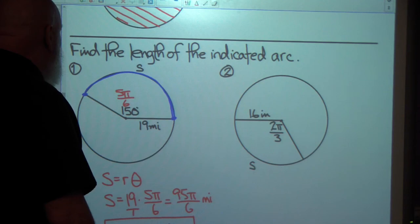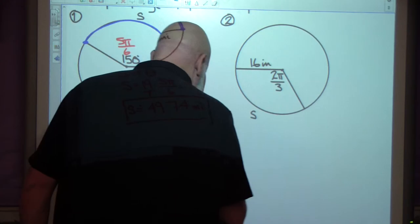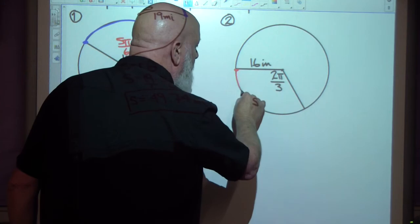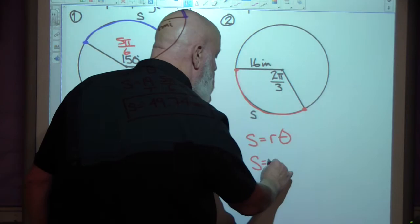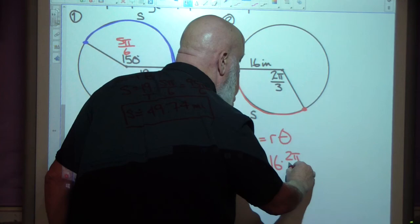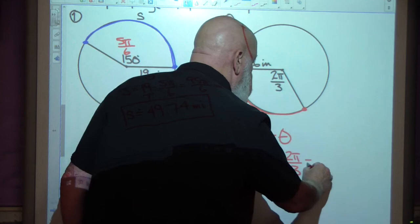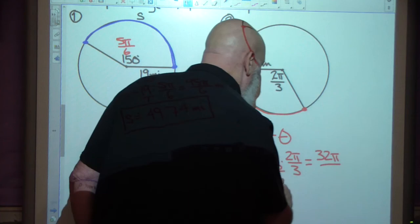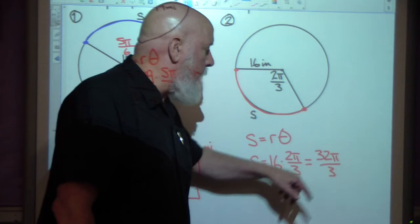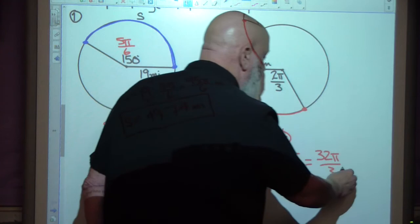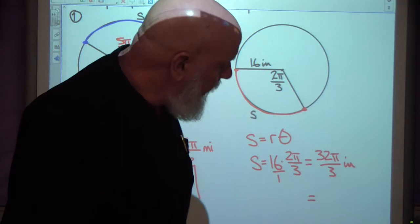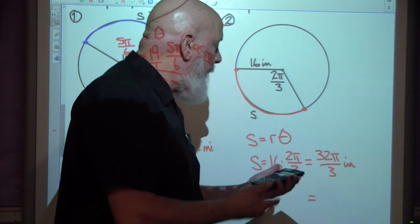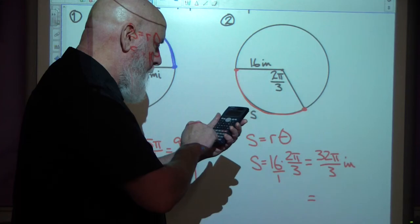Okay. Here we go. We have another one. This time it's already in radians. It's 2 pi over 3 radians. It gives us the radius. So the length of this arc is what I'm looking for. S equals R theta. So S equals R is 16 inches. Theta is 2 pi over 3. You can think of this as being over 1 and go 16 times 2. That would be 32 pi over 1 times 3 is 3. I'm guessing that's where the answer key is going to leave it. This will be in inches.